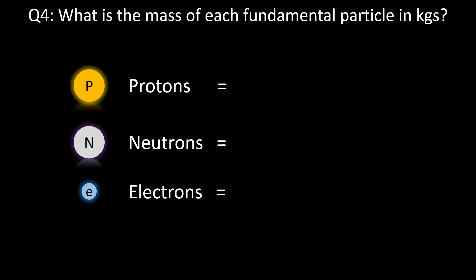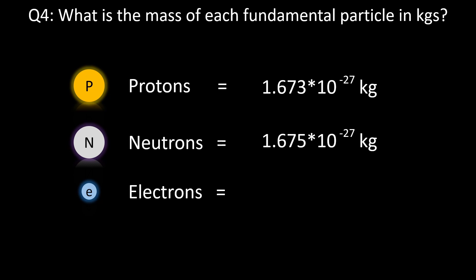Question 4: What is the mass of each fundamental particle in kilograms? The mass of a proton is approximately 1.673×10⁻²⁷ kg, the mass of a neutron is 1.675×10⁻²⁷ kg, and the mass of an electron is approximately 9.109×10⁻³¹ kg.